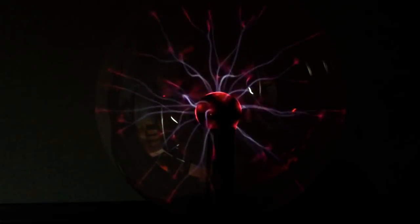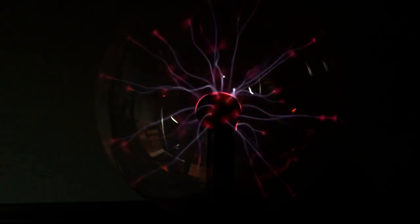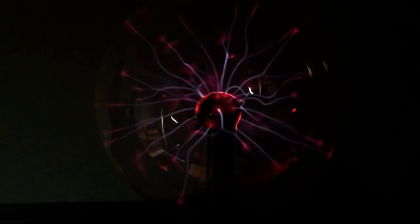You can actually see analogues of these channels in a plasma globe when it's not being touched. All those tendrils of plasma are trying to find a path for current to flow to the ground.